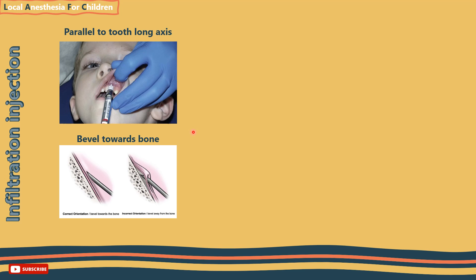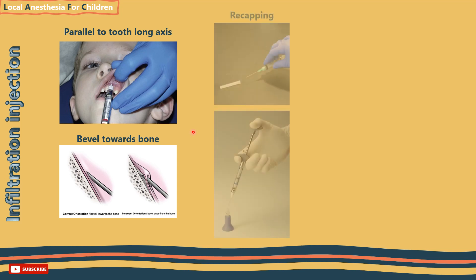If lingual tissue anaesthesia is necessary — for example, for rubber dam and clamp placement — inject the anaesthetic solution directly into the lingual tissue at the free gingival margin, or insert the needle interproximately from the buccal and deposit the anaesthesia as the needle is advanced lingually. Withdraw and recap the needle using the scooping technique or a needle recapper, then wait 3–5 minutes before commencing treatment.